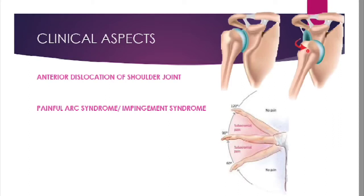Another condition is painful arc syndrome, also known as impingement syndrome, which usually occurs in elderly patients who complain of pain when trying to put on a jacket or raise the arm. It is characterized by mid-abduction pain: abduction up to 60 degrees is painless, abduction from 60 to 120 degrees is painful, and after 120 degrees it is again painless. This is due to impingement of the inflamed supraspinatus tendon or the inflamed subacromial bursa under the coracoacromial arch.